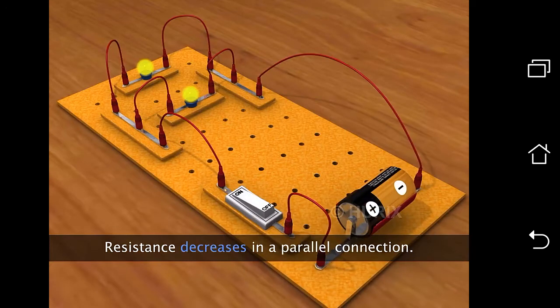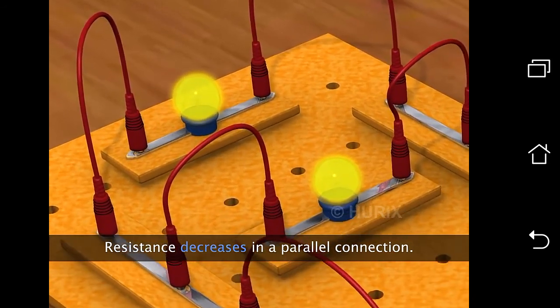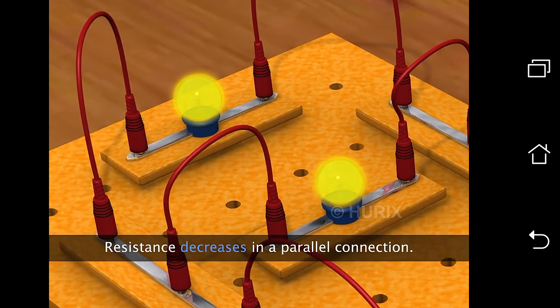But when the bulbs are connected in parallel, resistance decreases and the flow of current is not affected. This makes both the bulbs glow at the same intensity.